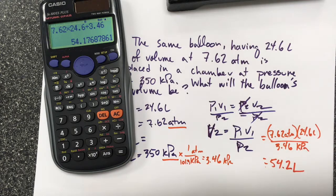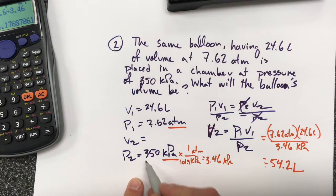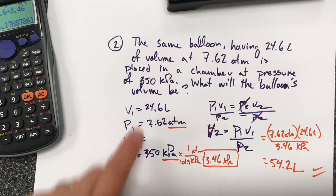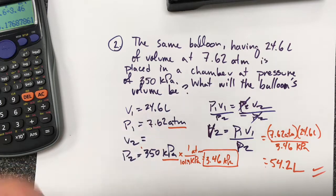So my pressure has gone down, and if you look, the pressure has gone down about half as much. So half the pressure, it makes sense that the volume is going to be twice as big, which is essentially what we've got going on here. So that's how you handle Boyle's Law calculations.